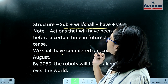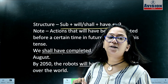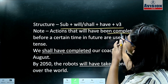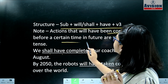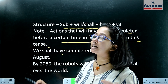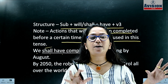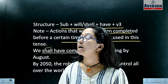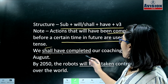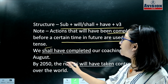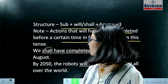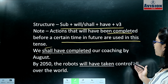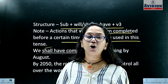Look at this — actions that will have been completed before a certain time in the future are used in this tense. For example, if you look at the coaching completing in August, or: 'By 2050, the robots will have taken control all over the world.'